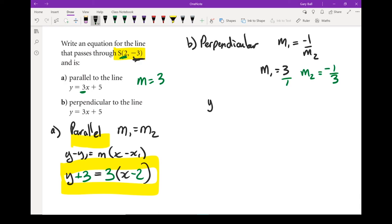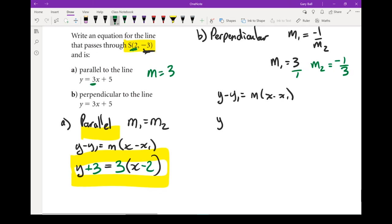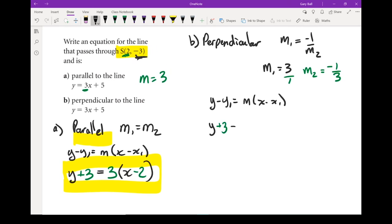Write out our equation. y minus y1 equals m times x minus x1. Put our pieces in. y1, my y1 is negative 3. Opposite sign is plus 3 equals, instead of m, I'm going to put in my new slope right there, negative 1 third x. And my x1 is 2. Opposite sign of that is minus 2. There is my point right there, and I'm going to flip that perpendicular line.